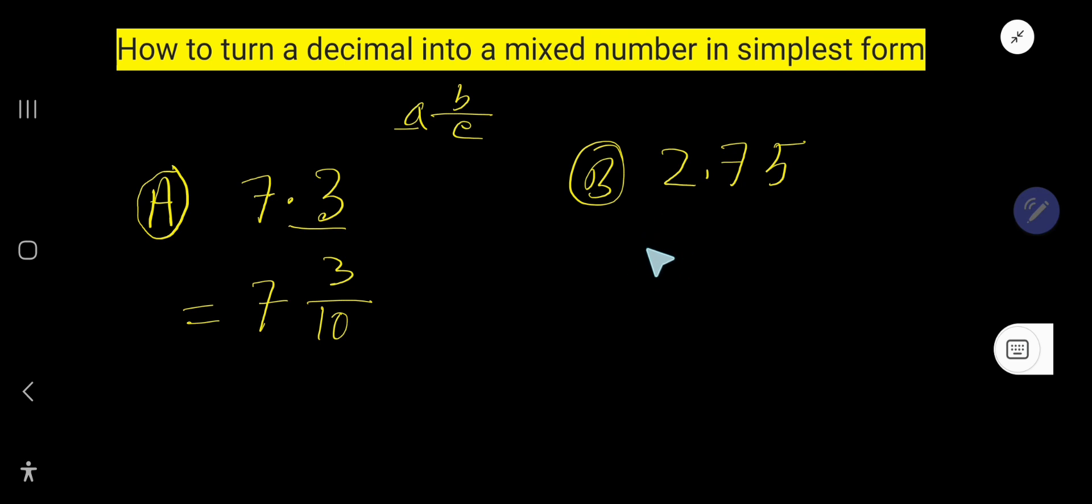Consider this decimal number. Here, the whole number part is 2, so write here 2, and convert 0.75 as a fraction.